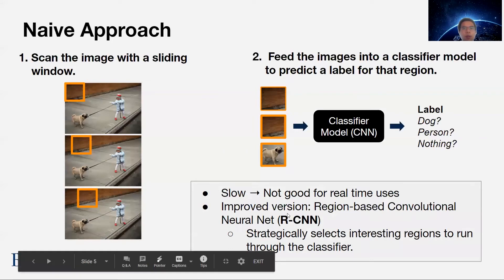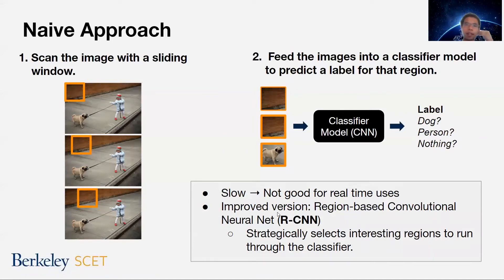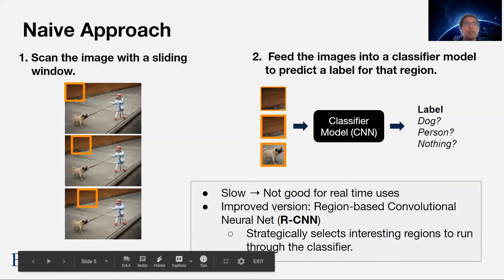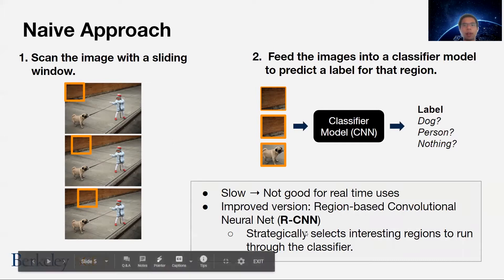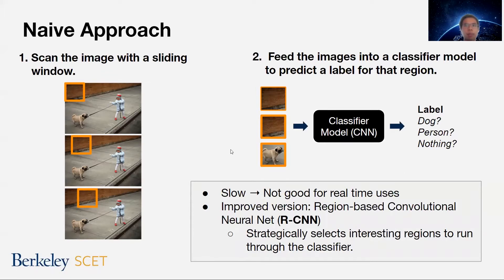One improvement is something called the region-based convolutional neural net (R-CNN). Instead of passing each window into the classifier, we look for areas of interest that might contain an object using image segmentation — finding contours and interesting shapes. We wouldn't pass a window over an area where there's clearly nothing. This R-CNN is an improvement over the naive approach, but the model we're going to talk about today, YOLO, is a much, much faster object detection model.